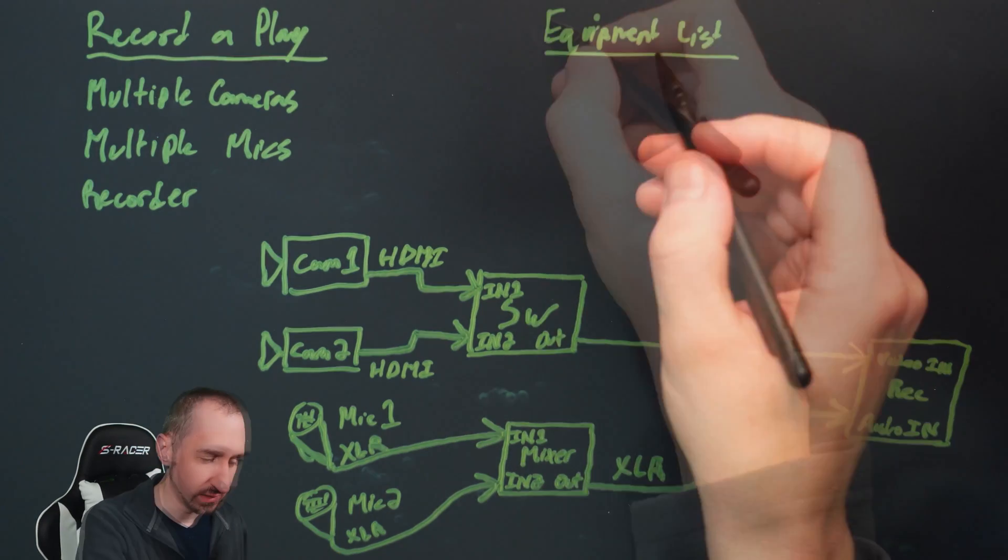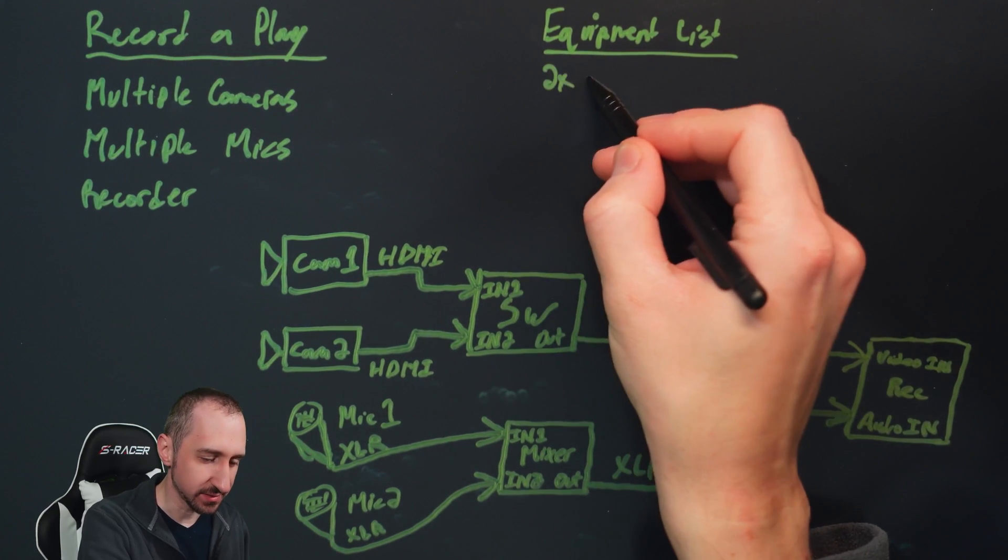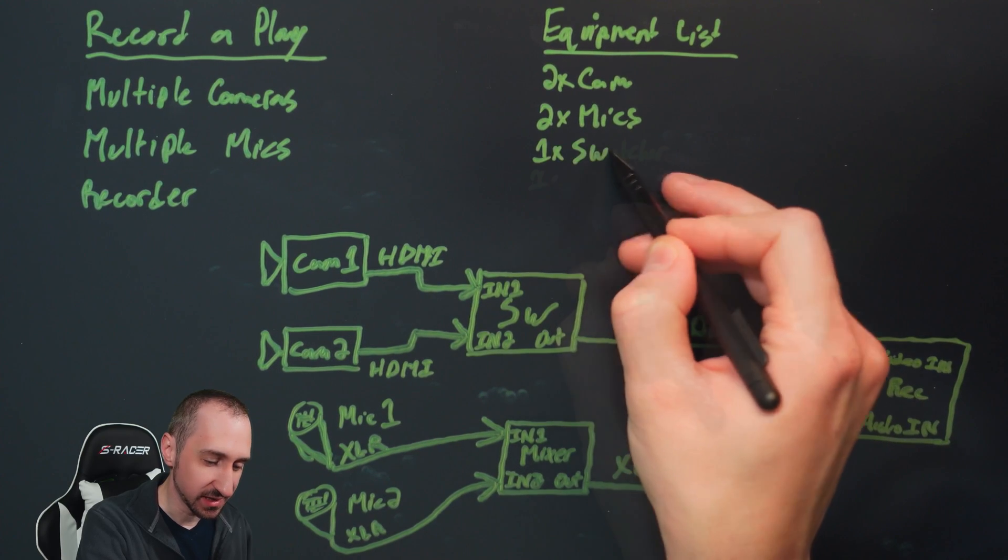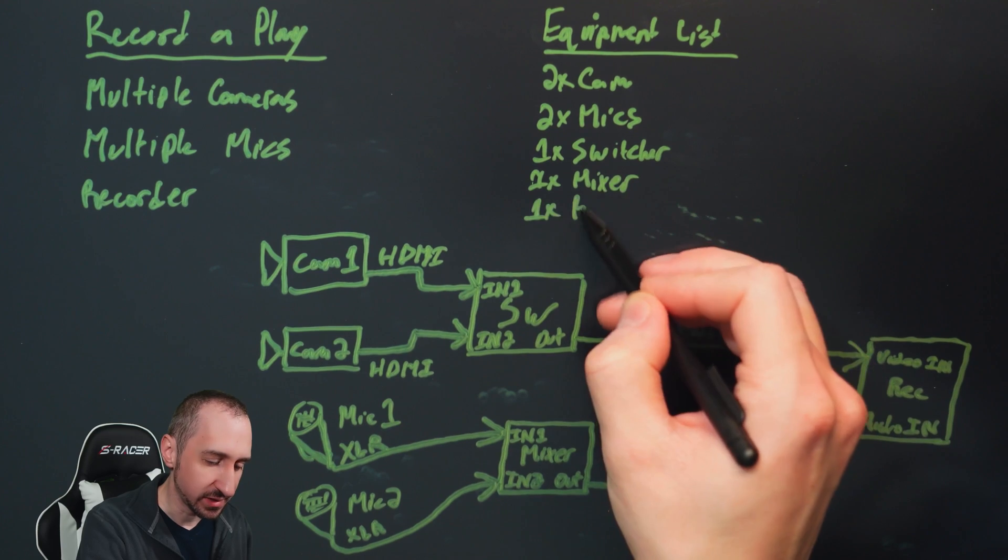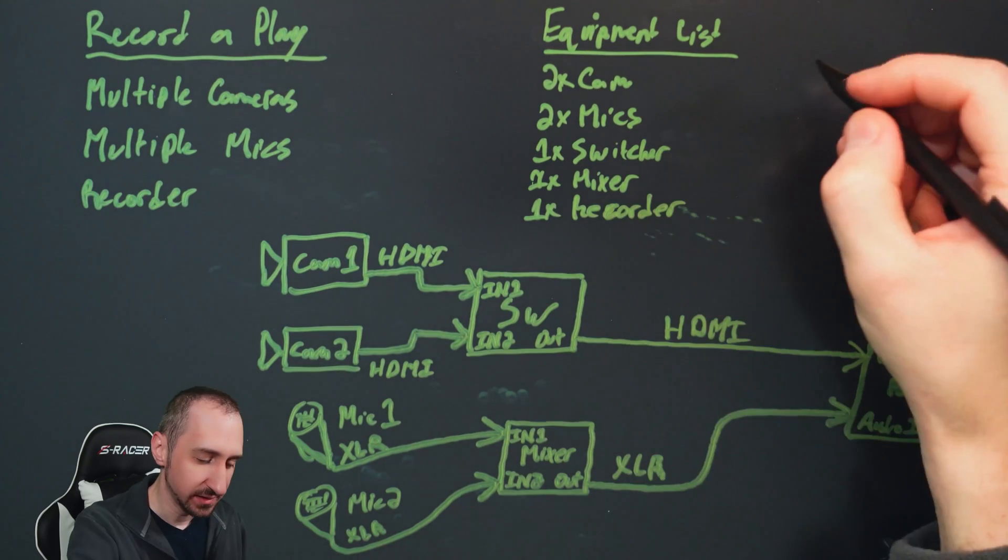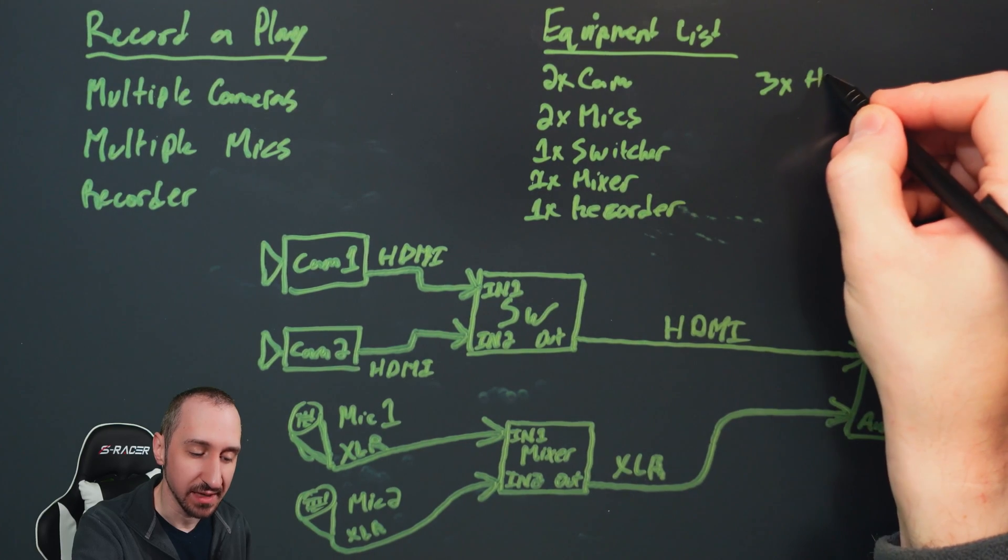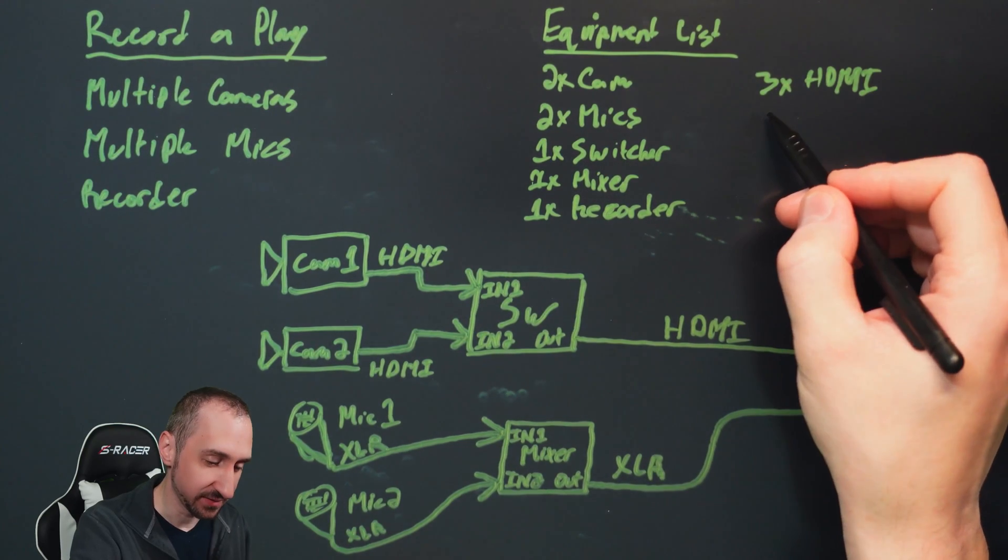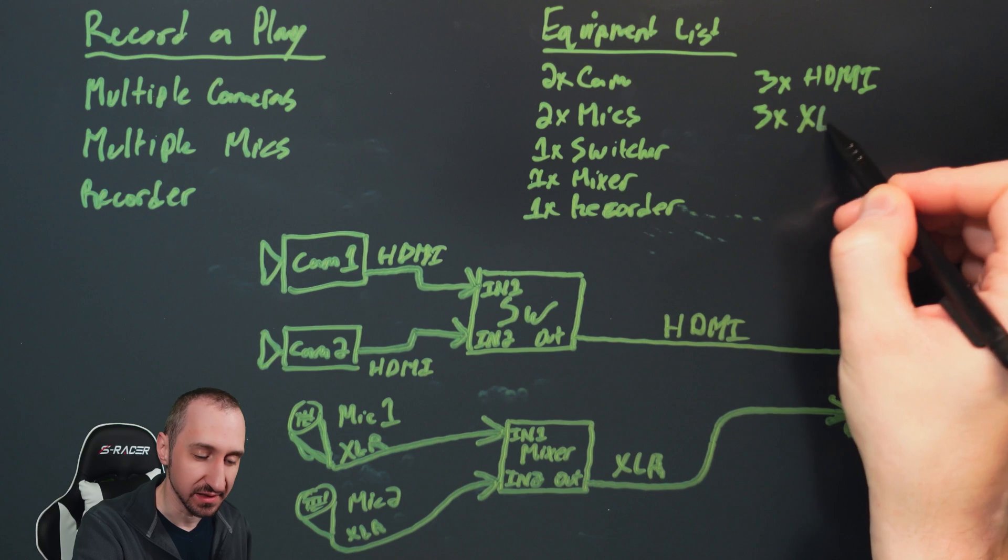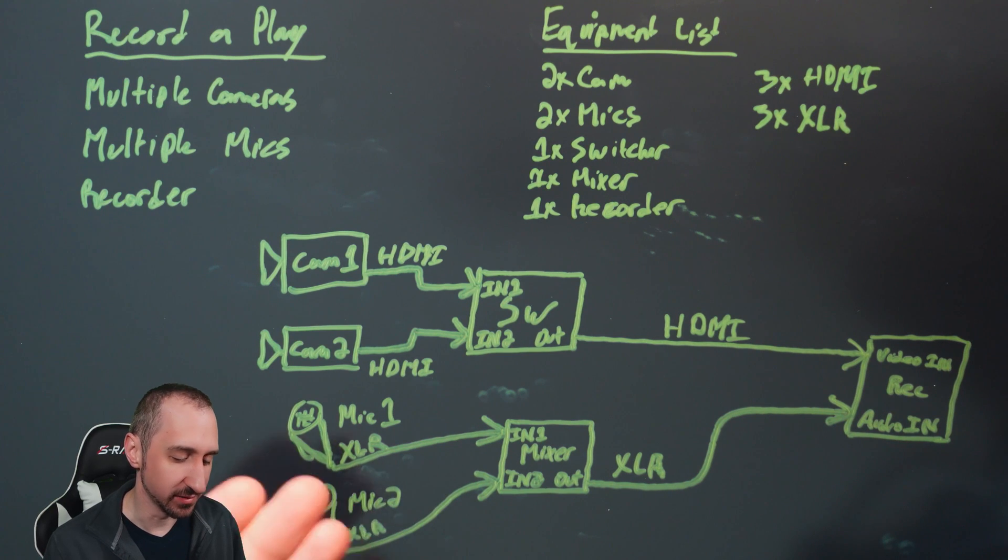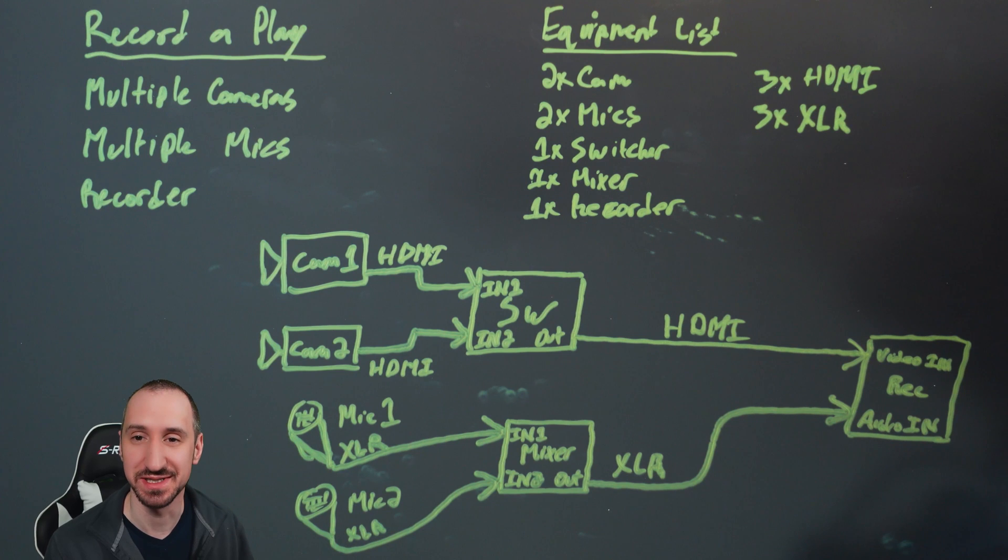So our equipment list: we have two cameras, two mics, one switcher, one mixer, one recorder. Then we have three HDMI cables and three XLR cables. And that's everything that we need to bring with us in order to perform this production. So we know what we have, we know where we're going to set it up, or we know what we're setting up I should say.